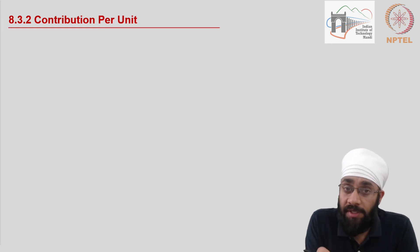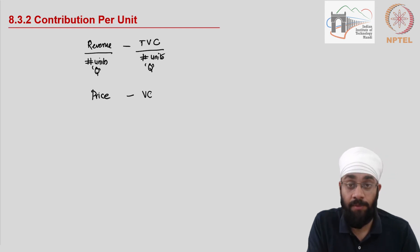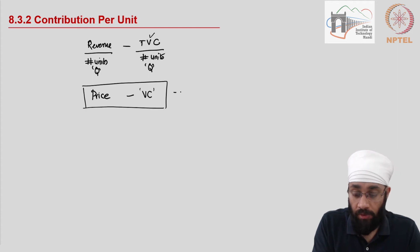Now contribution per unit is again very straightforward as we saw earlier. The contribution was revenue minus the total variable cost. Now just divide all of this by number of units. How many units are we talking about? And actually we have a word for it, we call it Q, quantity, and there you go. You have revenue per unit, which is called price. Revenue per unit is the price which is being charged, minus the variable cost. This is per unit. So this is what we are going to call contribution per unit. Simple as that, nothing fancy.